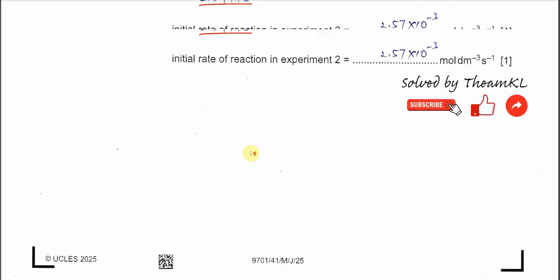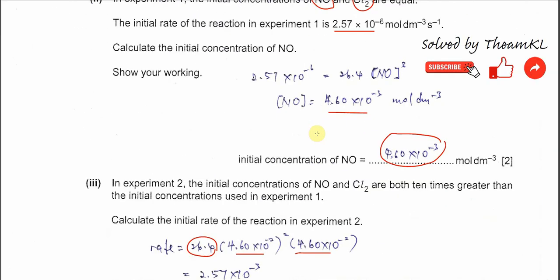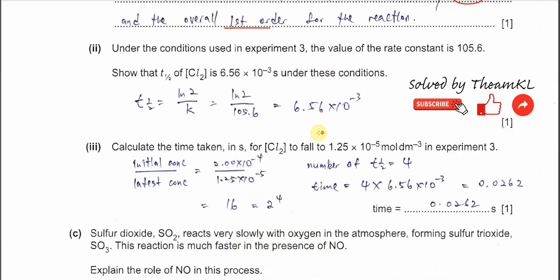The overall order observed here is 1, not 2 + 1 = 3, because NO is in excess. Part 2: under the conditions of experiment 3, the rate constant is 105.6. Use the equation: half-life = ln2 / k. Since ln2 and k are both constants, the half-life must be constant. Substituting ln2 / 105.6 gives 6.56 × 10⁻³ seconds, which is the value asked to be shown.